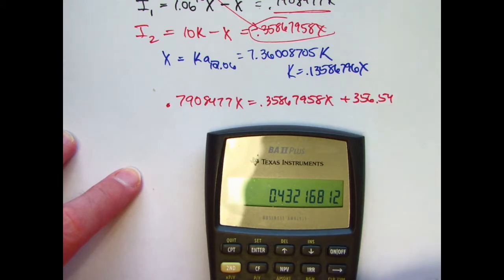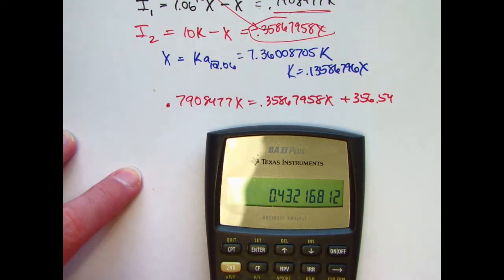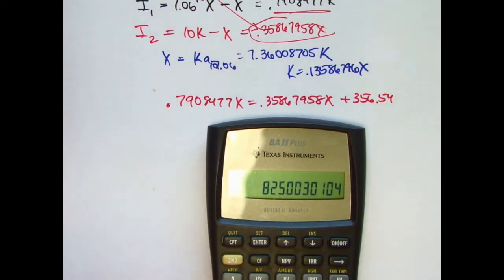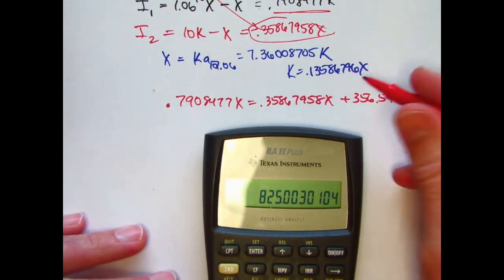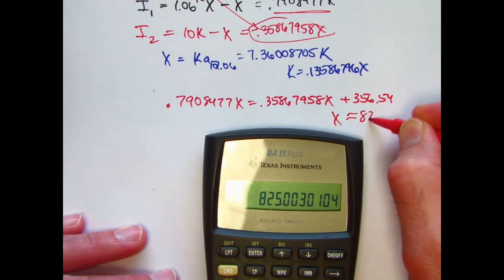Now, just take the reciprocal of this and multiply it by 356.54. And you get about 8.25 and close enough that probably in a multiple choice exam, the answer comes out exactly 8.25.